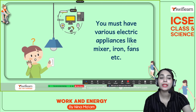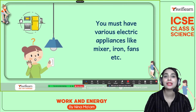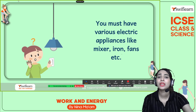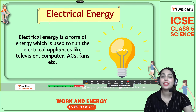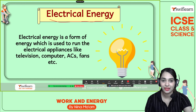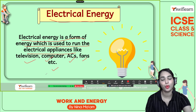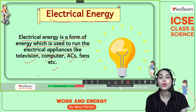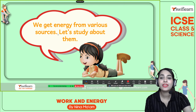You must have various electrical appliances like mixer, iron, fans, etc. In modern life, we rely on a lot of electrical appliances at home — fan, refrigerator, mobile phone and so many more. To run these appliances we need some energy, and that energy is known as electrical energy. Electrical energy is a form of energy used to run electric appliances like television, computer, ACs, fans and many more. Imagine one day there is no electrical energy — we cannot run any of the electronic appliances.